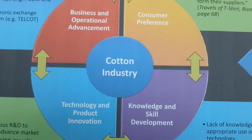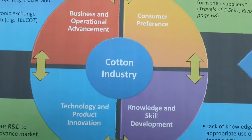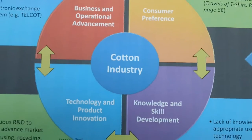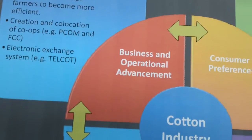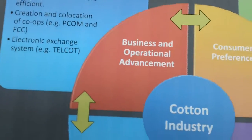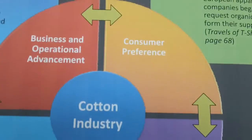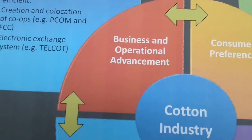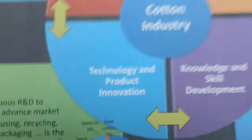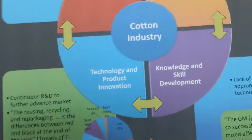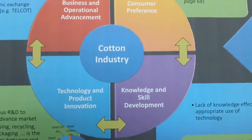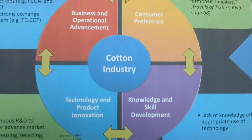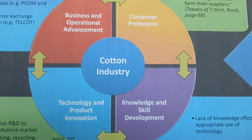Our framework goes to show some of the factors that are important to create dominance in a particular industry. First, we start with the market itself. We have identified four key sections that create a market. In this case, we're using the cotton industry as an example.